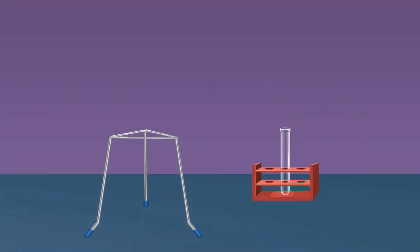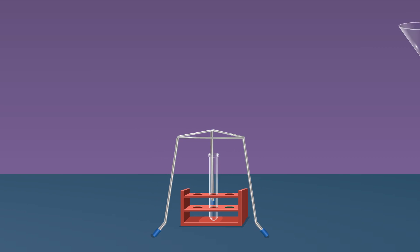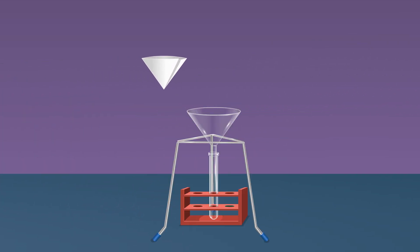Place a boiling tube below the tripod stand and then place a funnel in the tripod stand. Take the filter paper and fold the filter paper as shown and place it inside the funnel. Filter the content in the boiling tube using the filter paper.